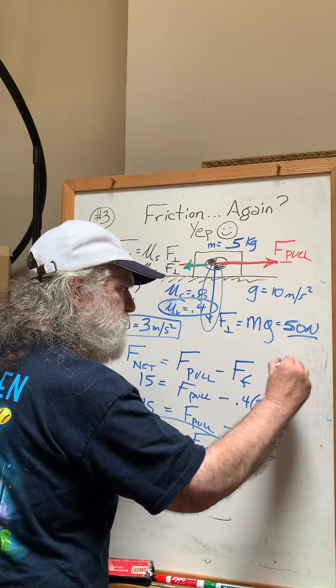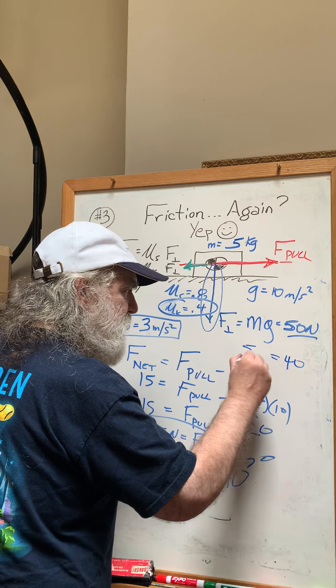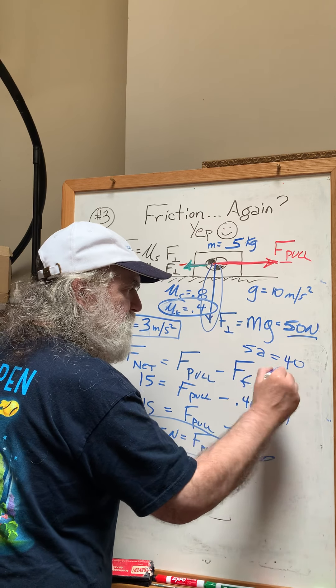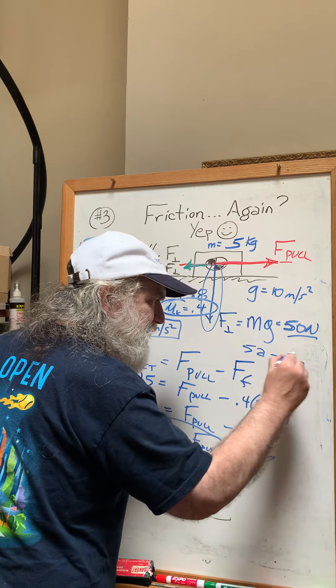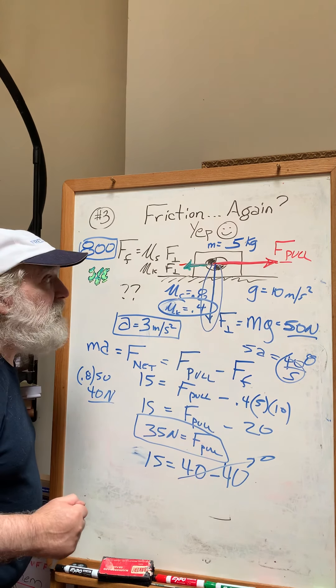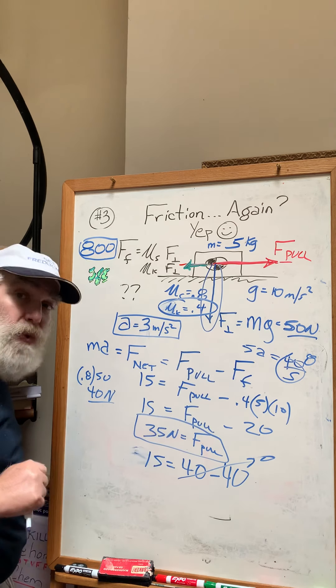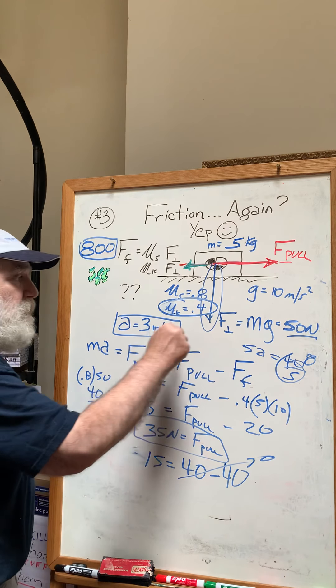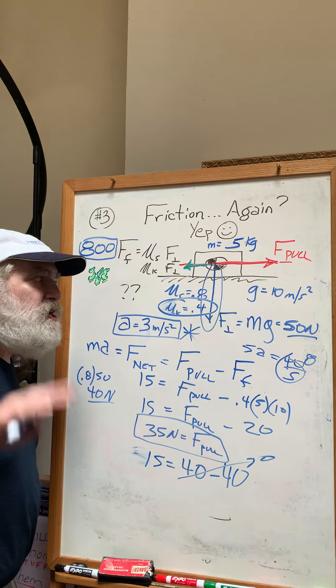If the net force is 40, that's ma, and the acceleration would be 8. So if you had pulled with the force that you needed to get the box moving, you would have to run away with it at a larger acceleration than the one I asked for.